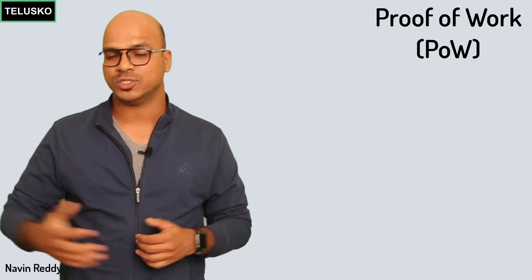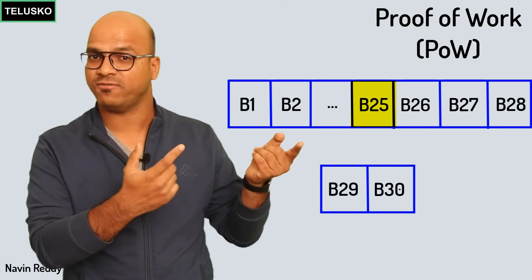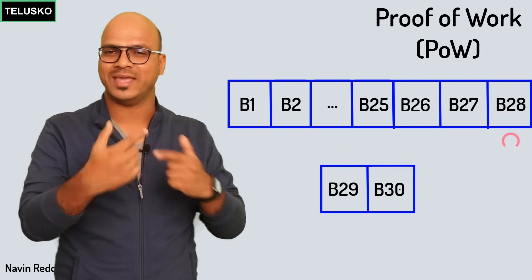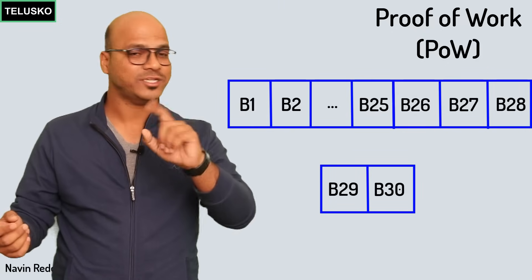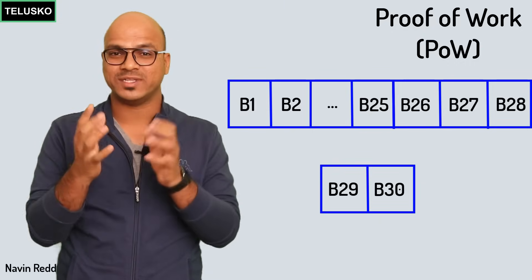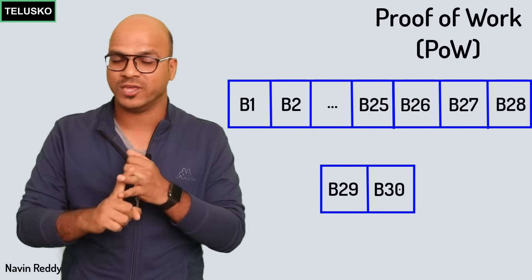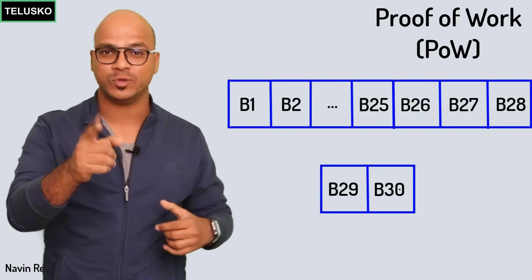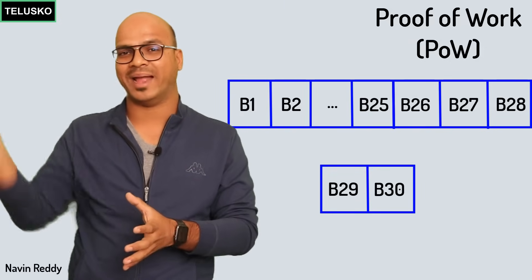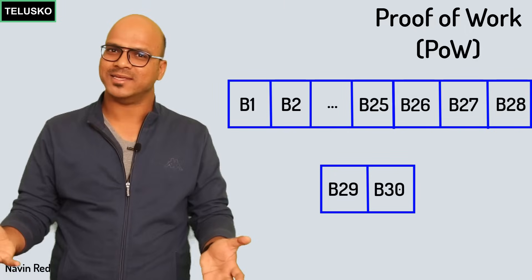Why do we need this? If you're spending a huge amount of computing power, the chances of you being a malicious node go down. Also, let's say in a blockchain you have 30 blocks and you want to change the 25th block — it will affect the hash of all remaining blocks. You might think you can just recalculate all the hashes, but no, because every time you make a change you have to redo the PoW, which takes time and computing power. And while you're doing that, other new blocks will be generated and added to the blockchain, making your attack useless.